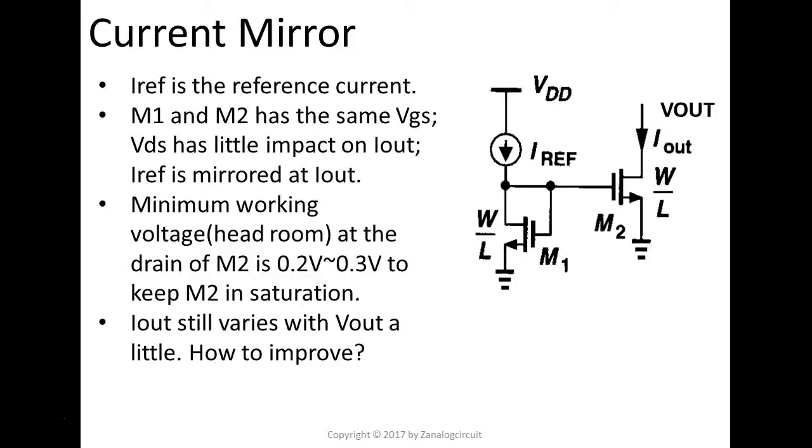In this video, we'll talk about the current mirror, one of the most unused analog circuit blocks in a chip design. Essentially, in a chip design, we have one block dedicated to generate a current reference, and then that current reference is copied everywhere.